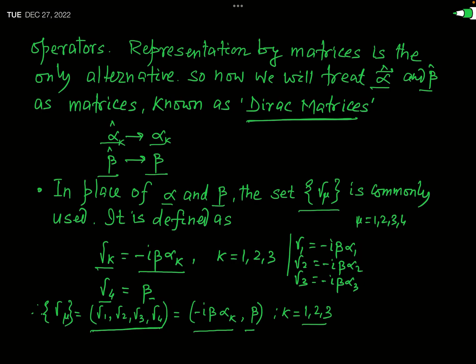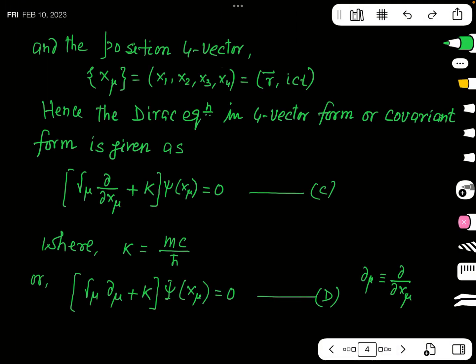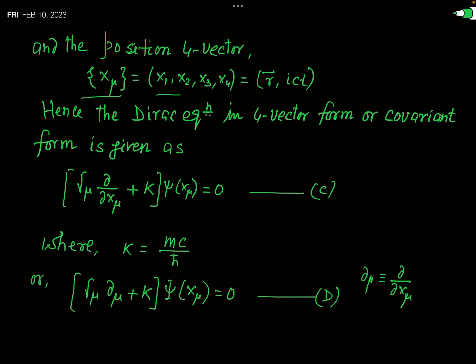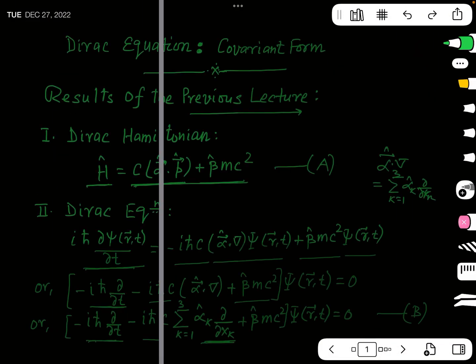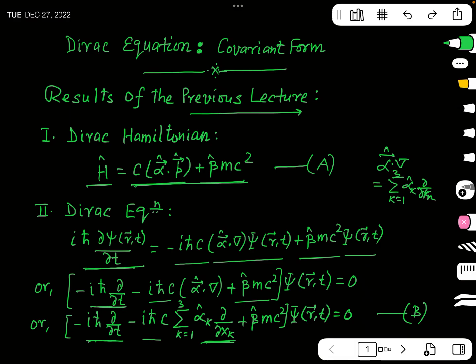Using this set of matrices γμ, we can now express the Dirac equation in a more convenient covariant form. Recall also that the position four-vector xμ is represented as (x1, x2, x3, x4), where x1, x2, x3 are components of the three-dimensional position vector r and the fourth component x4 = ict is the temporal component. In terms of these two four-vectors γμ and xμ, the Dirac equation can be written in a very simple four-vector or covariant form.